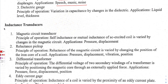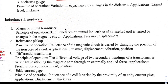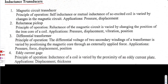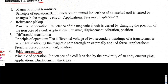Then we use inductors as transducers. For example, the eddy current gauge: its principle of operation is that the inductance of a coil is varied by the proximity of an eddy current plate. Its application is in measuring displacement and thickness.